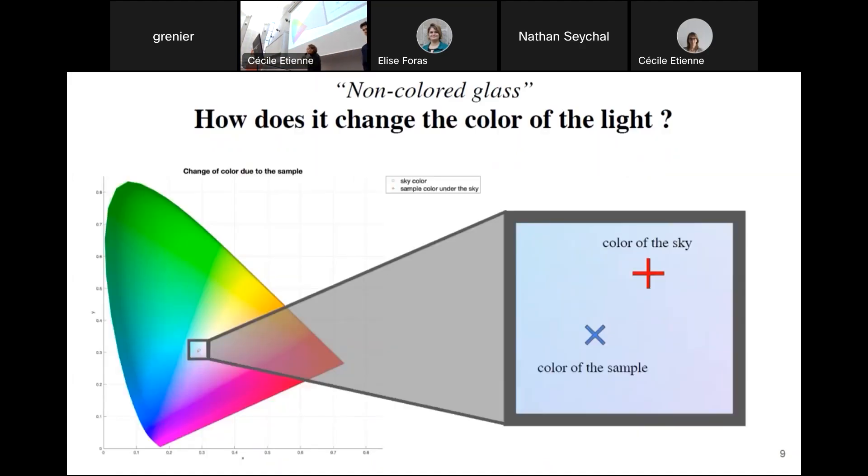So first, let's see if the stained glass is really non-colored. We took a picture of the sky and then a picture of the sample illuminated by this same sky. As you can see on the chromaticity diagram, the color of the sample is nearly the same as the one of the sky. And visually, you can't tell the difference. So yes, the stained glass is color neutral for daylight.